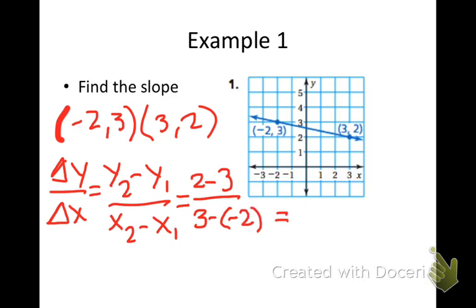This would be equal to 2 minus 3 is a negative 1. And 3 minus a negative 2 would be 3 plus 2 or 5. So m slope would be equal to a negative 1 over 5.